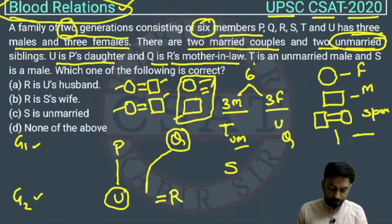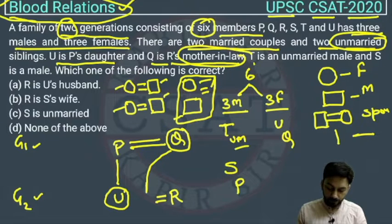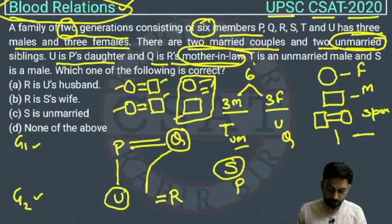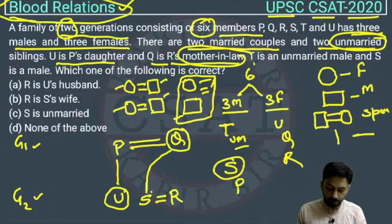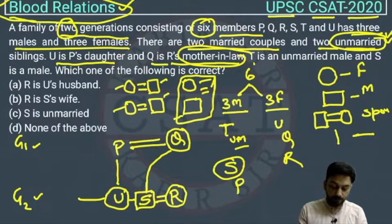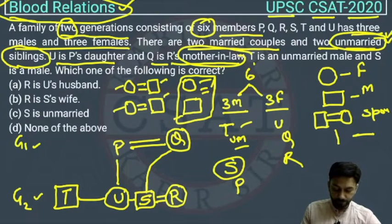So P will be male. We have P, Q, R, S — S is also given as male, and T is unmarried so T cannot be in the married couple. So S will come as the married male in generation 2. R will be female because we have 3 men and 3 women, and the men are P, S, and T. So R will marry S, and R is female. T is the unmarried male, and the remaining unmarried sibling will be U. T and U are the two unmarried siblings.